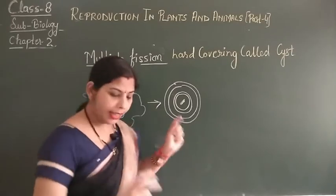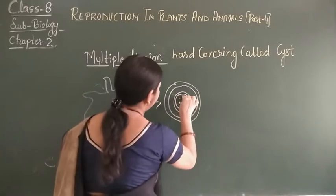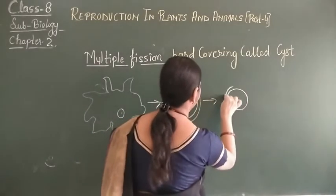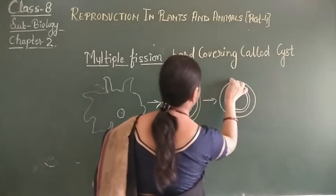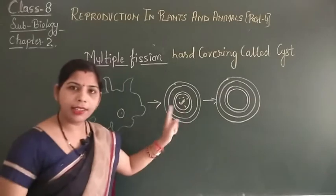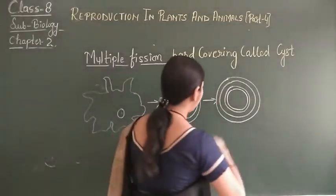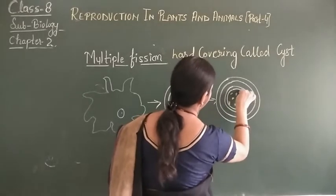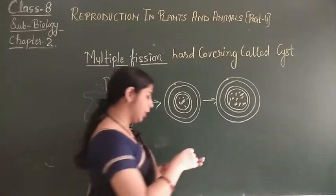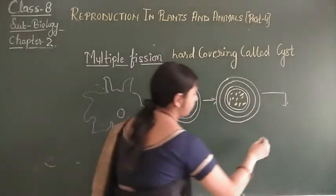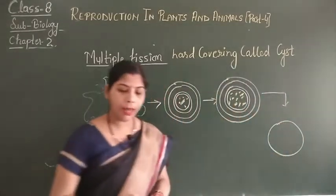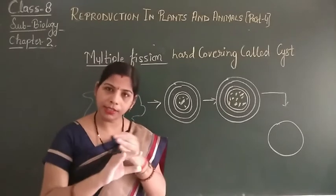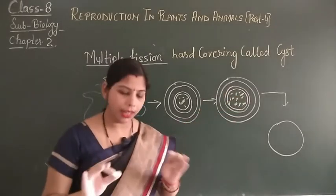After the hard covering — the cyst — is formed, within this cell, inside the cell, the nucleus repeatedly divides to form many nuclei. Just like in binary fission, after the nuclei division, the cytoplasm is further divided, and each nucleus is covered by the cytoplasm. So the cytoplasm divides so many times that each nucleus becomes covered by cytoplasm.